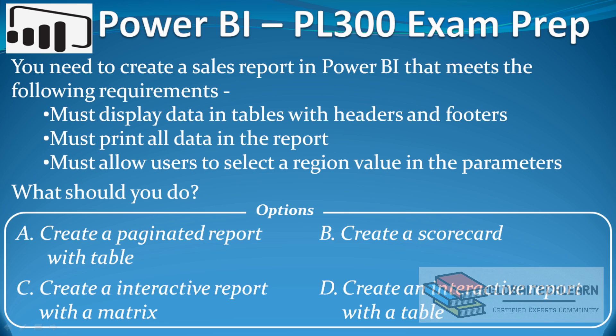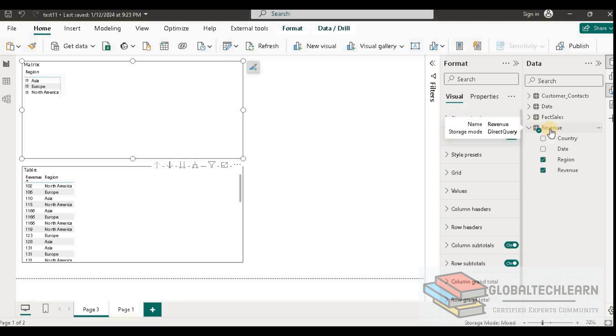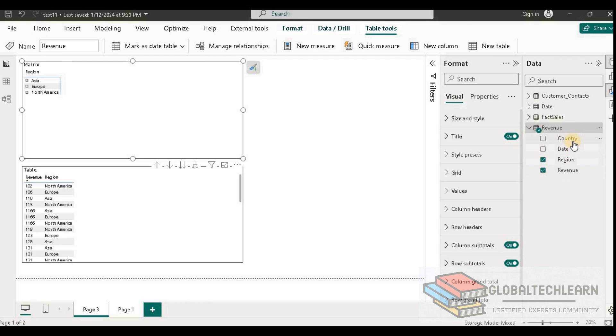As we can see, we need to meet three requirements: there should be a header and footer on the report, it should print all the data, and there is a parameter. In Power BI, we usually don't have header and footer, so any type of visual we choose in Power BI won't allow us to provide a header and footer. Let's look at Power BI first — here I have a revenue table, and under revenue I have country, date, region, and revenue.